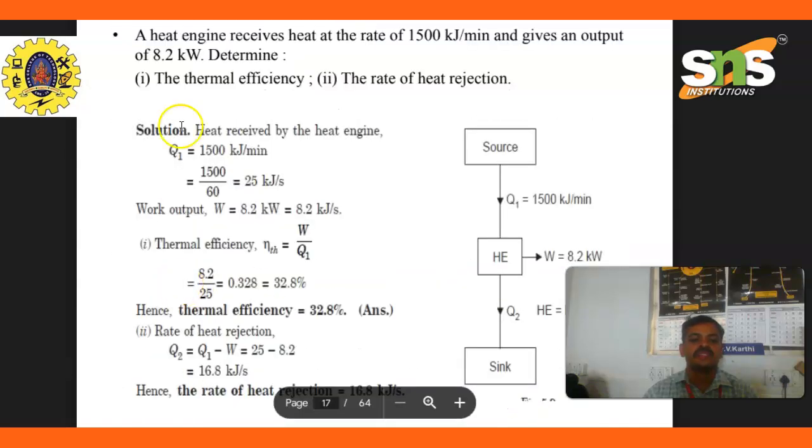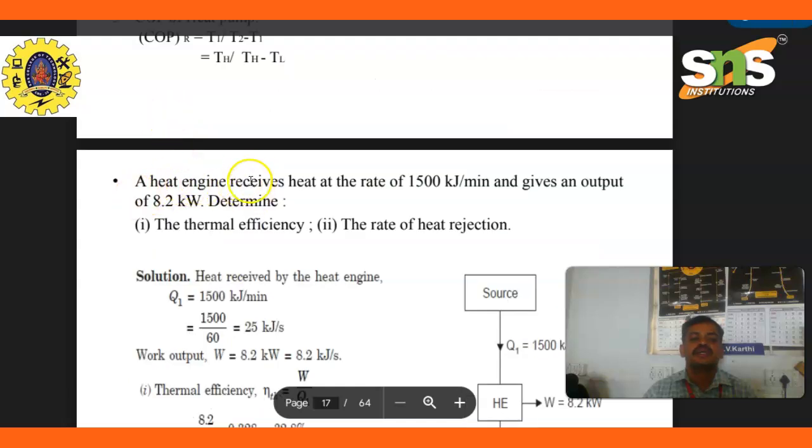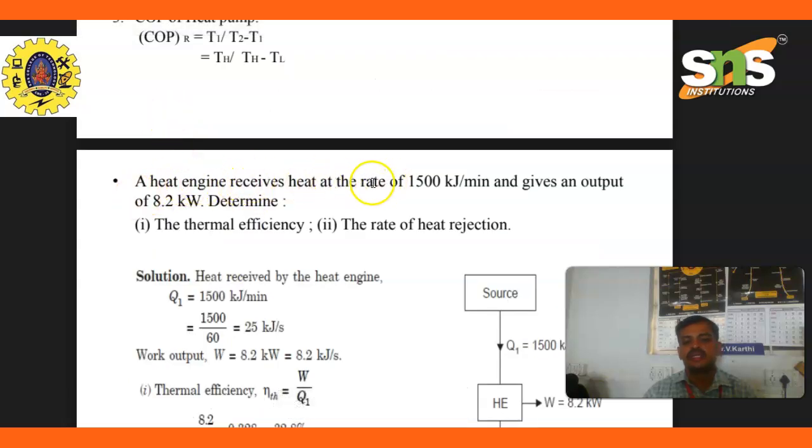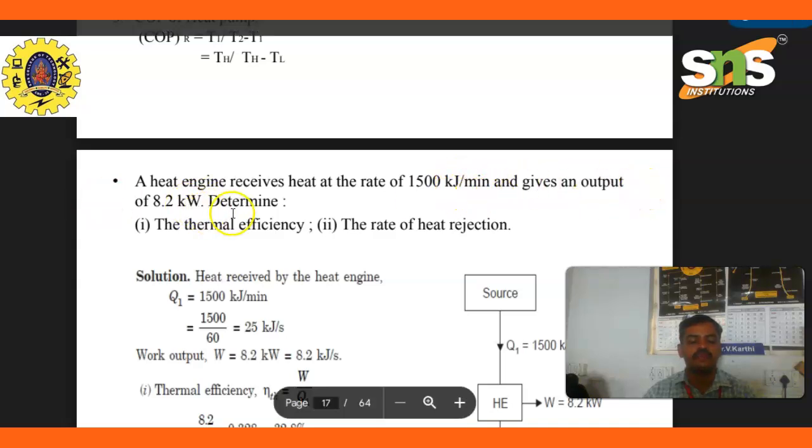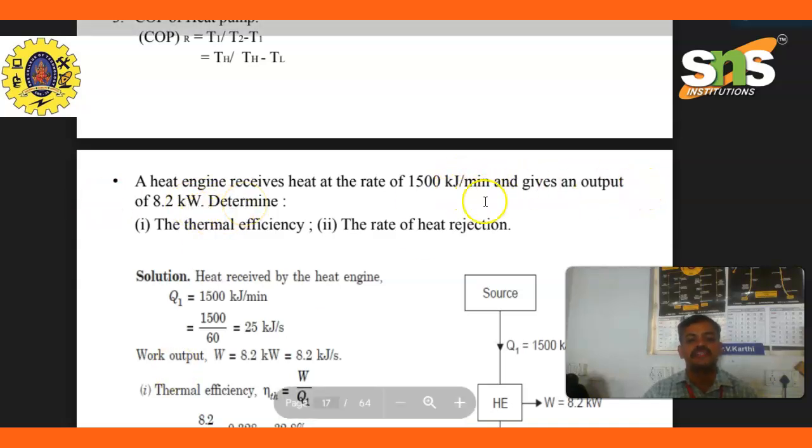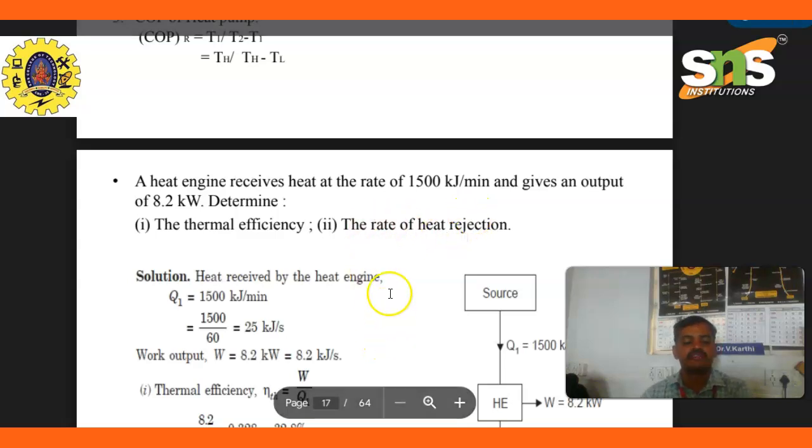Example problem: A heat engine receives heat at the rate of 1500 kilojoules per minute and gives an output of 8.2 kilowatts. Determine the thermal efficiency and the rate of heat rejection.